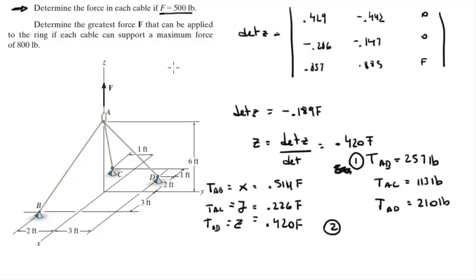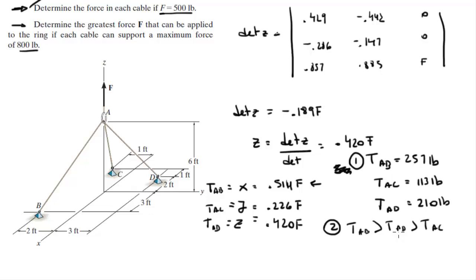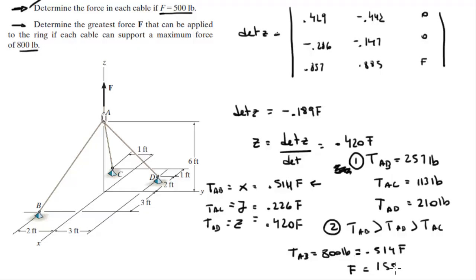For Problem 2, the maximum tension cannot exceed 800 pounds. Since T_AB has the largest coefficient (0.514), it will reach the limit first. Setting T_AB = 800 pounds and knowing T_AB = 0.514F, solve for F: F = 800 ÷ 0.514 = 1556 pounds. That is the maximum force that can be applied to the system.